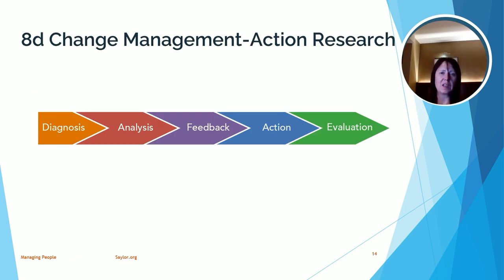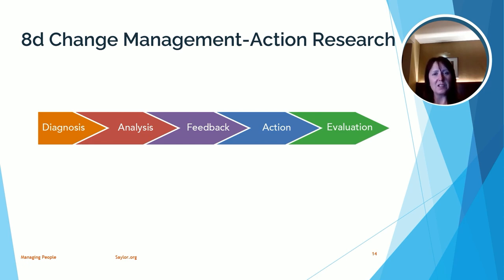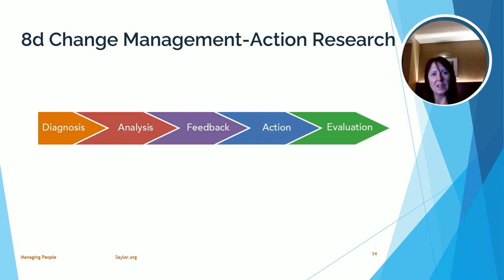Our last approach to change management is action research — a series of steps to help determine what type of change you may want to make and when. The first step is diagnosis: identify an opportunity or problem you want to address. Then you analyze the change, its problems and challenges, and how you may resolve it. You get feedback from anyone impacted by the change and hopefully gain buy-in as well. Then you take action and implement the change. Finally, once the change is done, you evaluate how well it worked and make any small adjustments needed to make that change accepted.